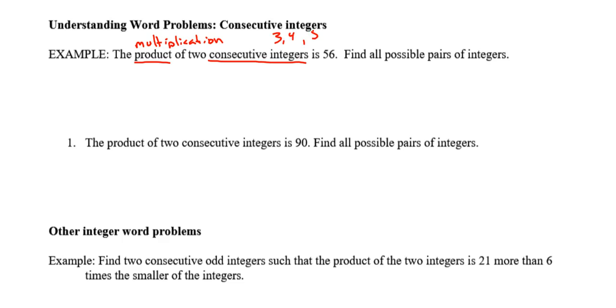Consecutive would be like 3, 4, 5, 6. How do I get from 3 to 4? I add 1. So to move from consecutive integers, you're always adding 1. To generalize that, for any integer x, the next integer will be x plus 1.